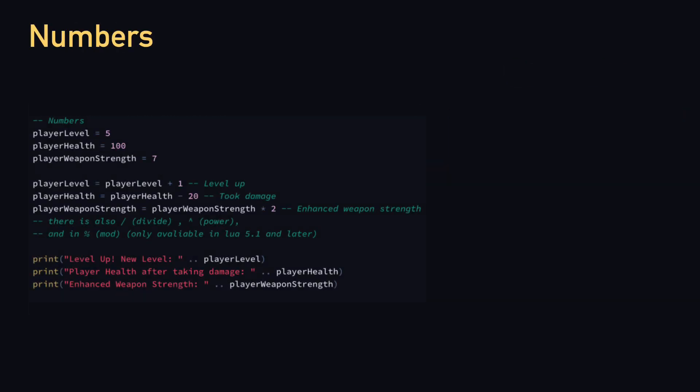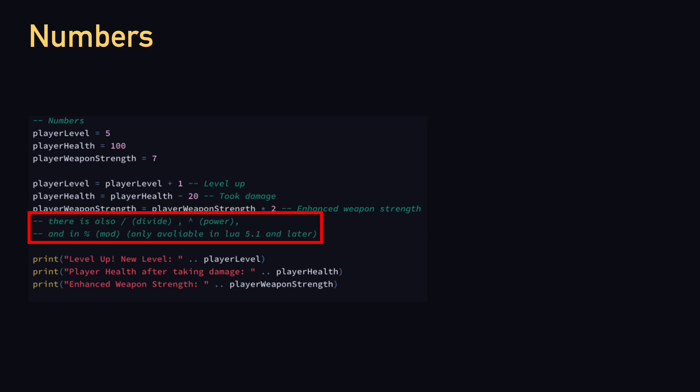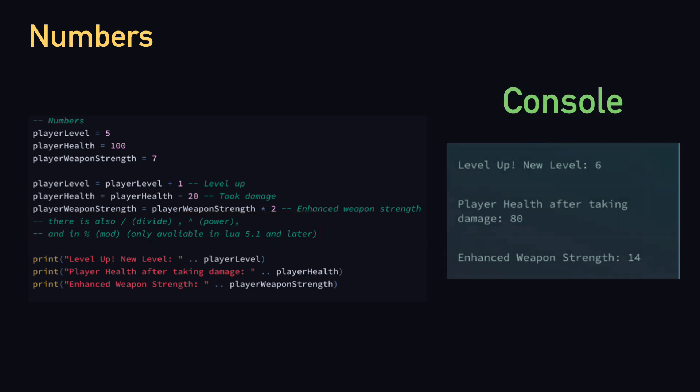Before we move forward, we're going to analyze what numbers can do in Lua. In this example, we have player_level, player_hp, and player_weapon_strength, all of which are numbers. We add one to player_level to level up the player, minus 20 from player_hp meaning it took damage, and multiply player_weapon_strength by two to enhance the weapon strength. There are also extra operations available: divide, raise to the power, and mod, which is the remainder of a division. If we print out all the values, we get the result.